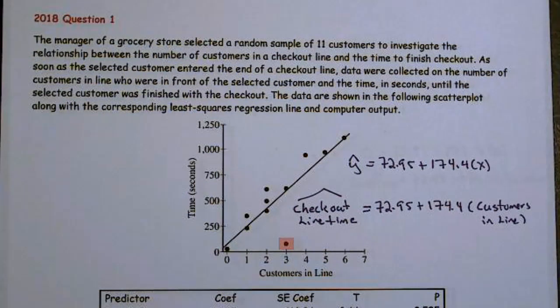The data are shown in the following scatterplot, along with the corresponding least squares regression line and computer output.